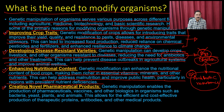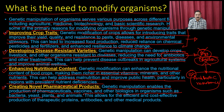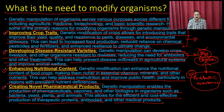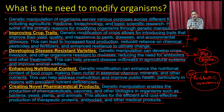You can also utilize modified organisms to develop novel pharmaceutical products. Genetic manipulation can enable the production of pharmaceuticals, vaccines, and other biologicals in organisms such as bacteria, yeast, plants, and animals. This allows for efficient and cost-effective production of therapeutic proteins, antibodies, and other medicinal products — which we will discuss in detail when we talk about the application of biotechnology at the end of this unit.